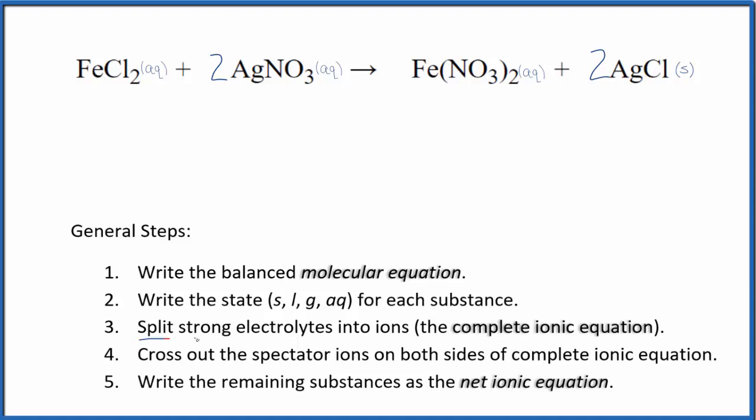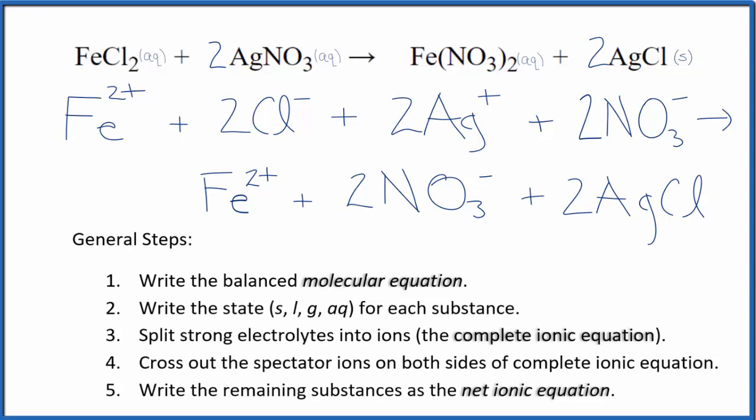Now, we can split the strong electrolytes into their ions, and this is going to give us the complete ionic equation. We can use the periodic table or remember the charges on the polyatomic ions to do that. This is the complete ionic equation. Everything is soluble except our precipitate here, except for this silver chloride. We'll put an S after this. Everything else is going to have AQ because it's aqueous.